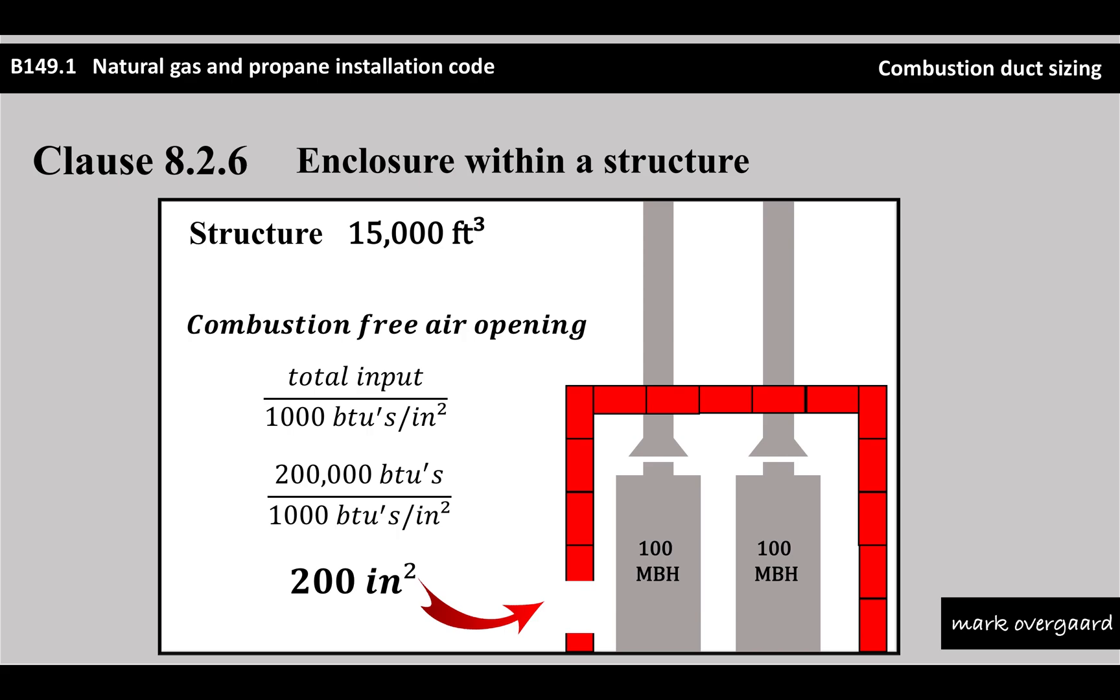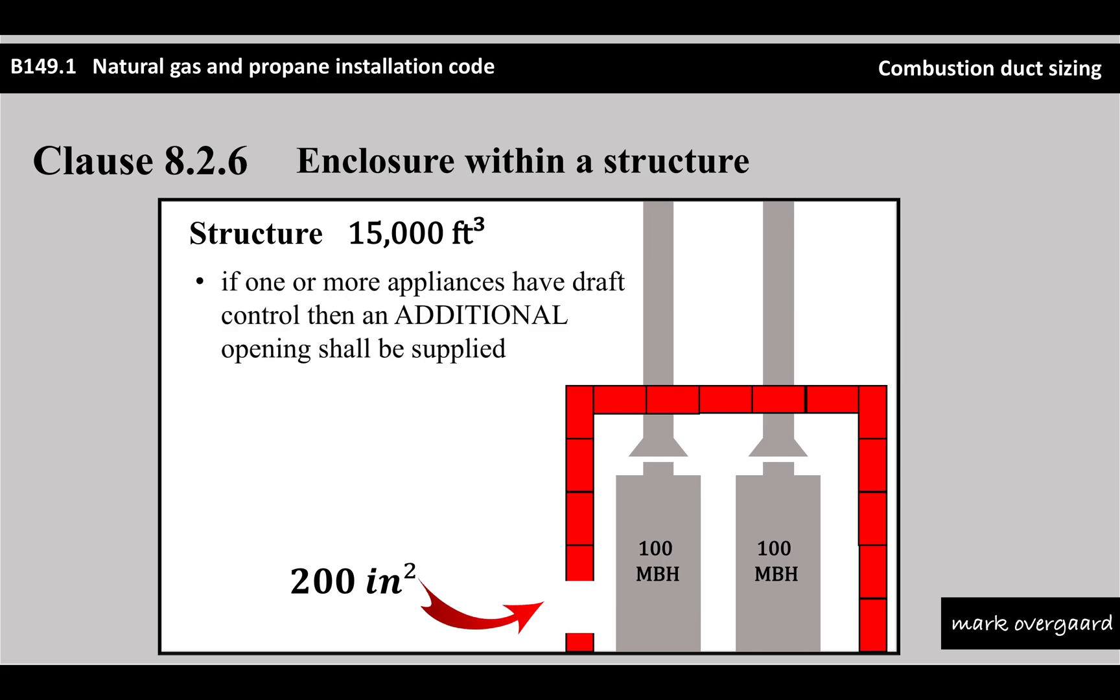There's a second part to this clause as well. If one or more appliances have draft control, which we do, then an additional opening shall be supplied. The idea is this: the products of combustion are supposed to go up the vent, and the draft hood itself allows in dilution air. If there's a scenario where the products of combustion end up coming down the vent, maybe a downdraft, the draft hood allows the products of combustion to spill - we get flue gas spillage. It prevents the flue gas from going back onto the burner and stifling it.